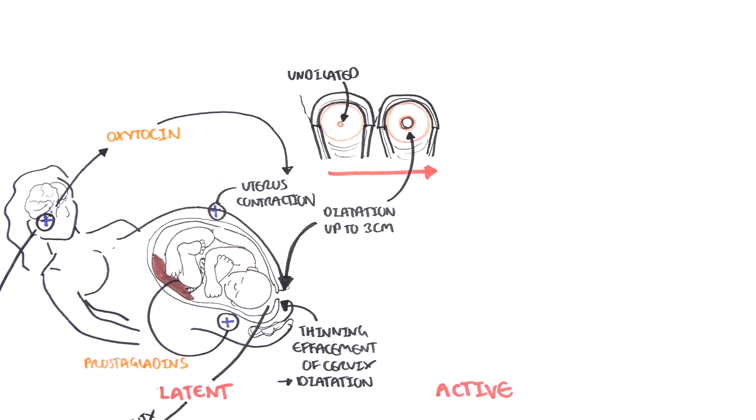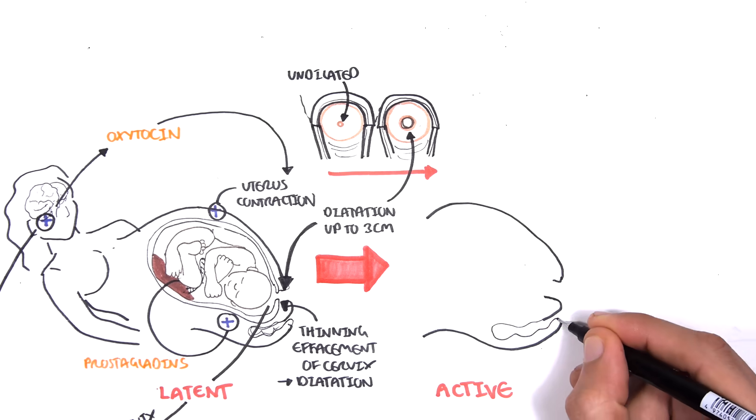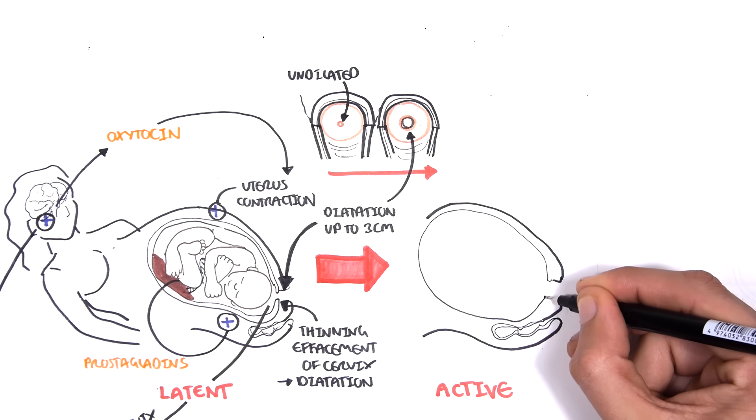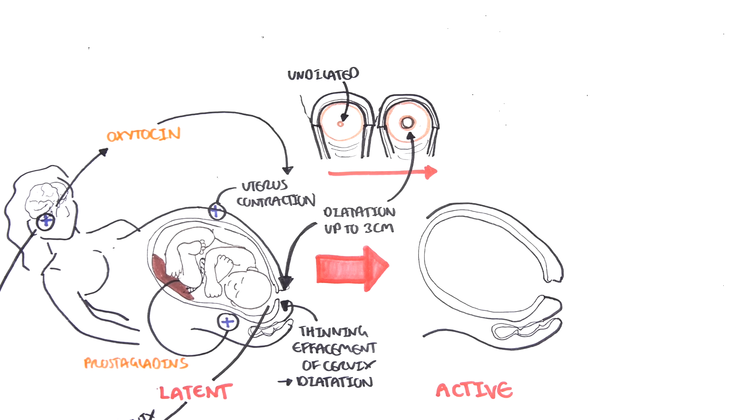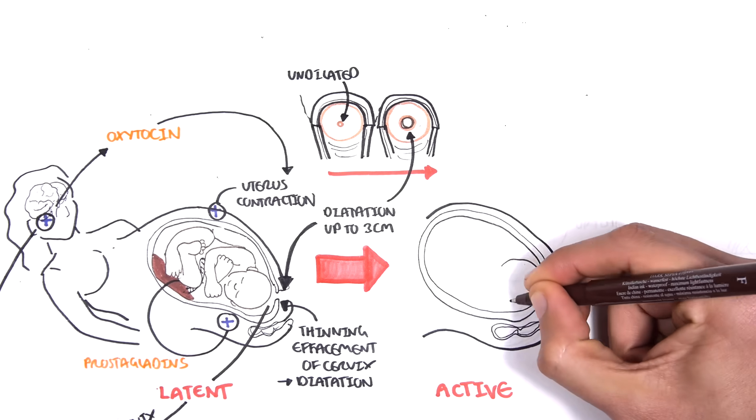Once the cervix opens to about 3cm in diameter, or some sources say 4cm in diameter, the latent or initial phase of stage 1 of labor will then enter the active phase of stage 1 of labor.